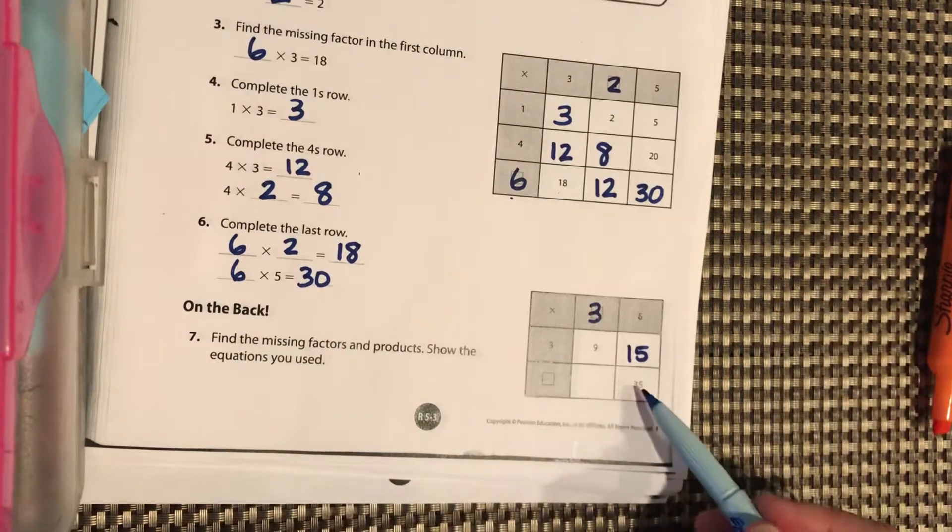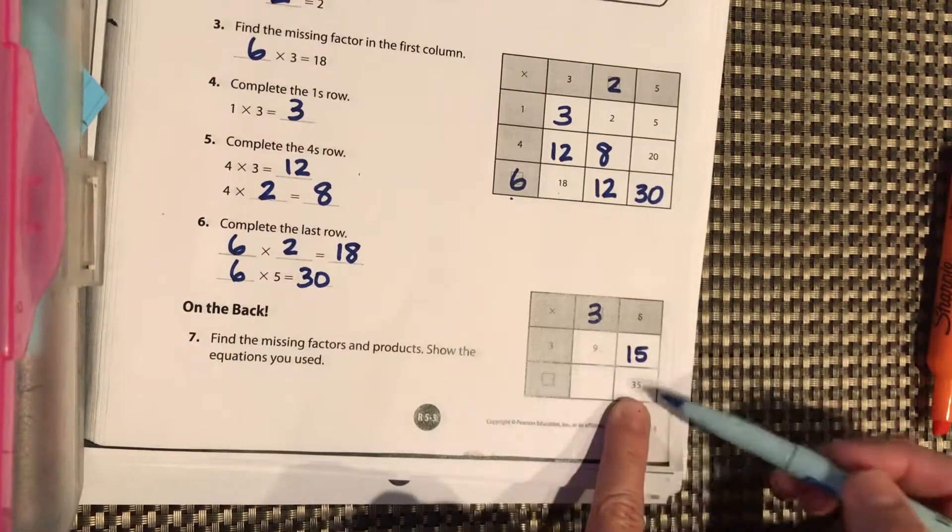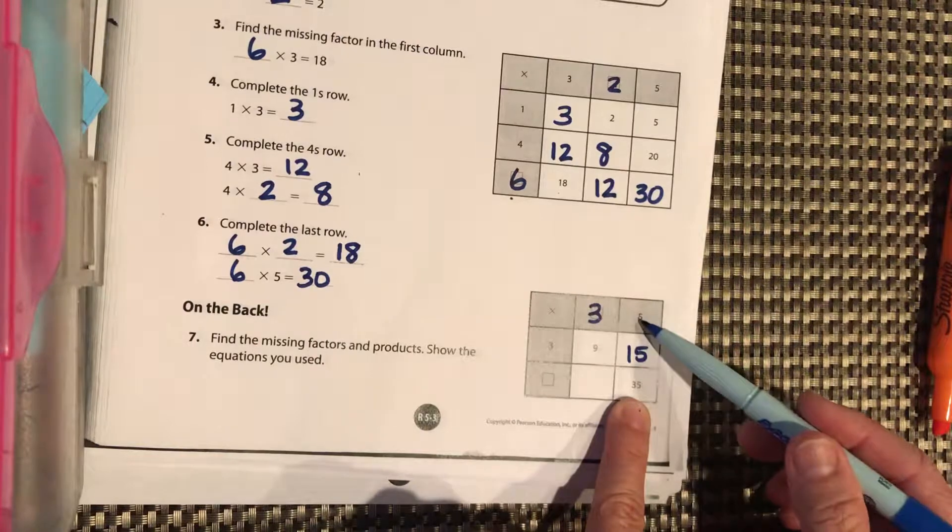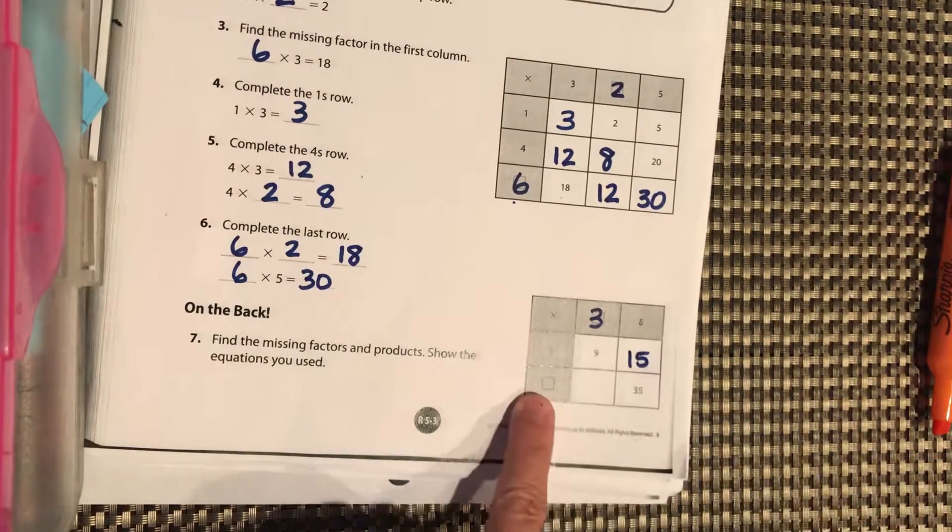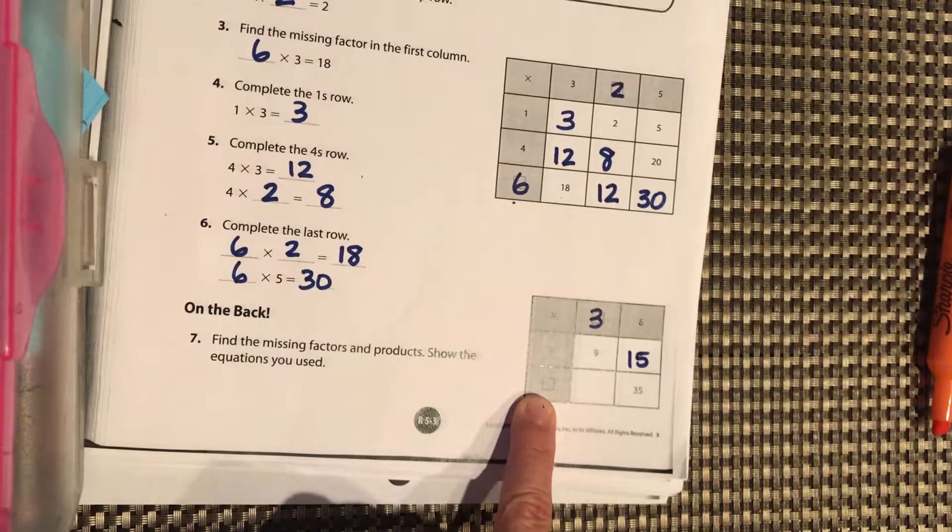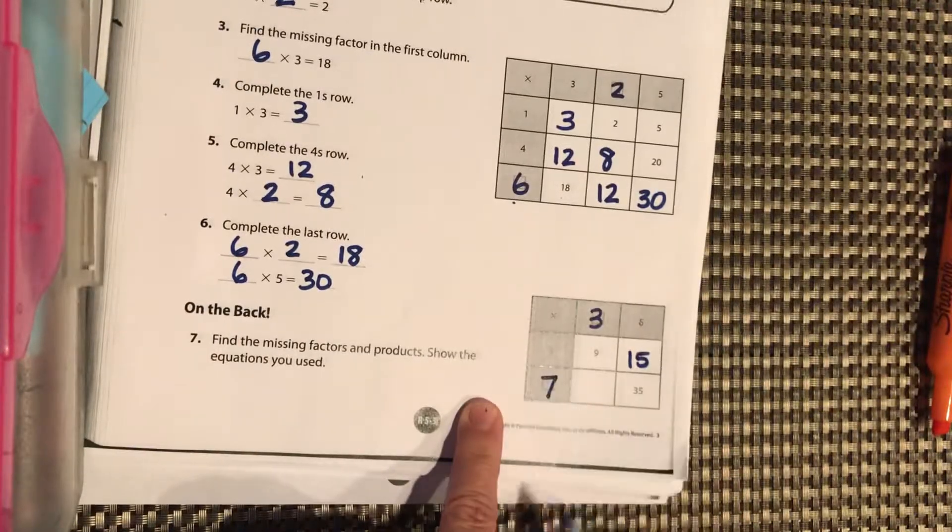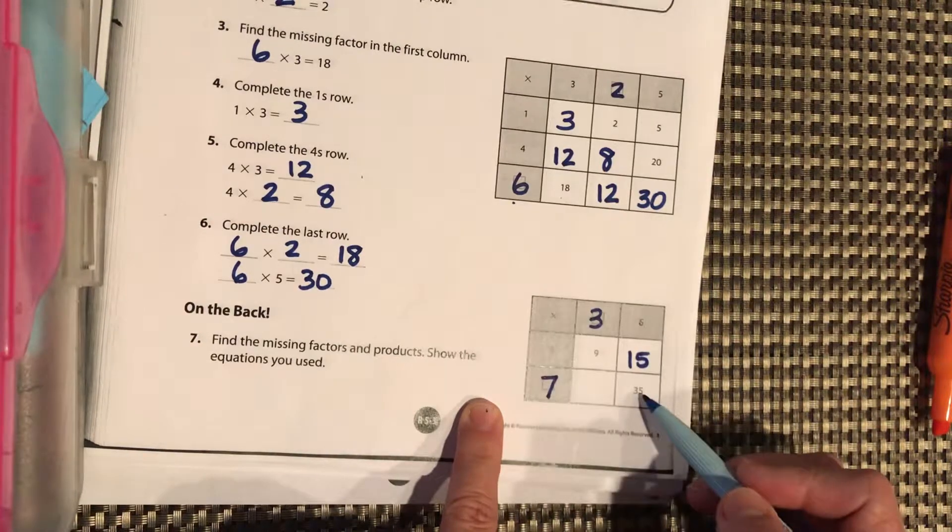Okay, now to figure out this one, we know that 5 times something equals 35. So count by 5s until you get to 35. Pause it and write that number right there. It should be 7. So 5 times 7 equals 35.